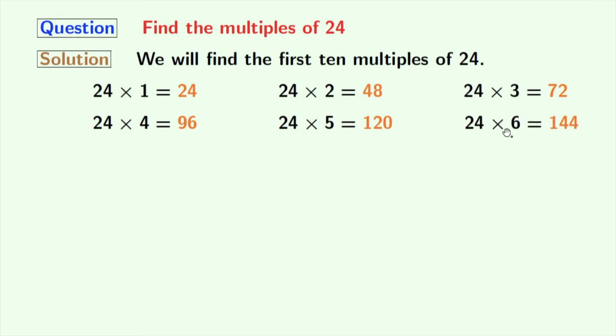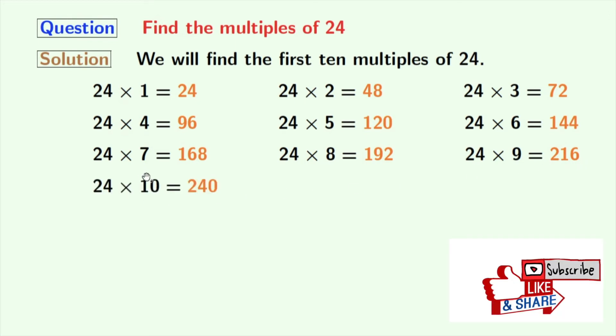24 times 6 equals 144. 24 times 7 equals 168. Multiplying 24 with 8, we get 192. Multiplying 24 with 9, we get 216. Multiplication of 24 and 10 gives us 240.